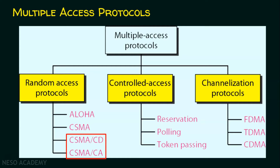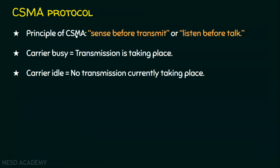Before we go into CSMA/CD or CSMA/CA, let's recap CSMA. The principle of CSMA is: sense before transmit. Before transmitting data, any station must sense the channel, and if it finds the channel is free, only then should it send — otherwise it leads to collision. When a station senses the channel, there are two possibilities: the carrier may be busy (transmission ongoing) or idle (no transmission currently taking place), and a station can start transmitting its frames.